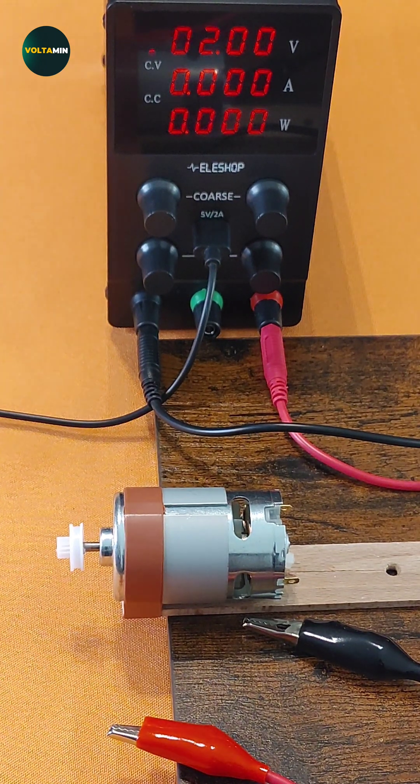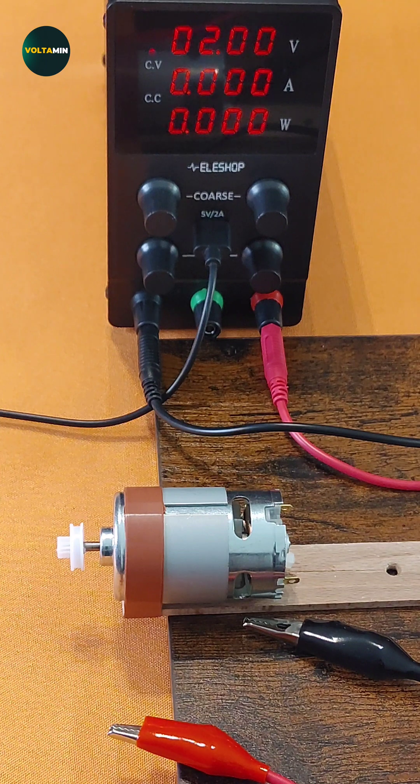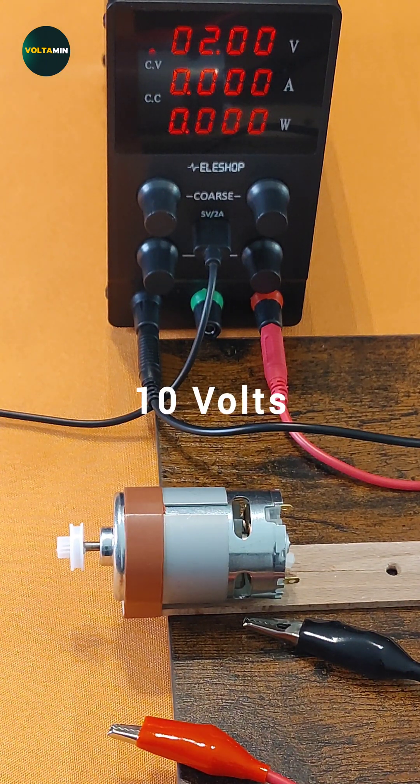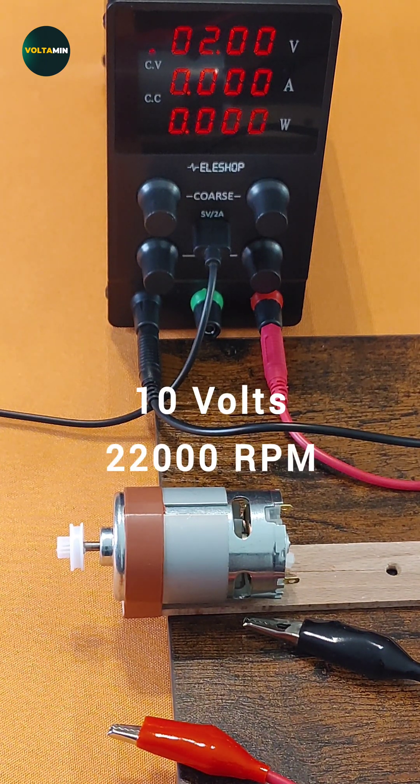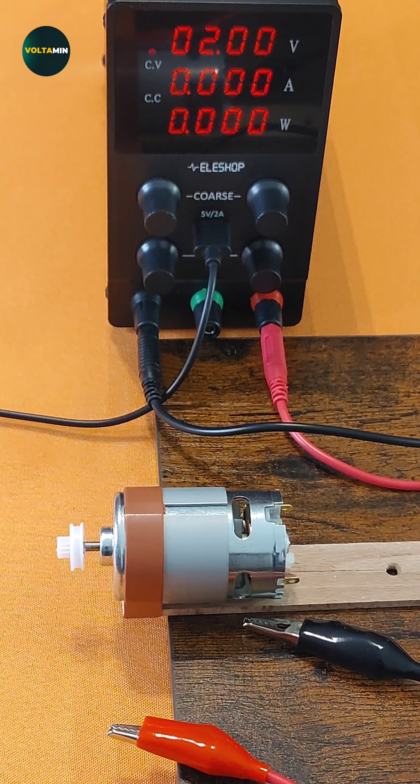Today, we're exploring how increasing voltage affects the speed of a 10 volt DC motor capable of reaching 22,000 RPM, rounds per minute, at full voltage.